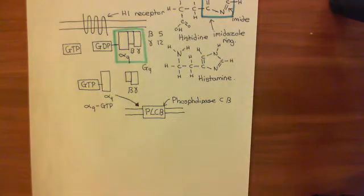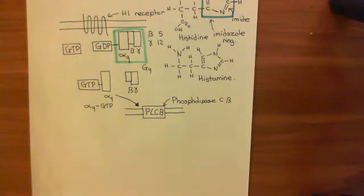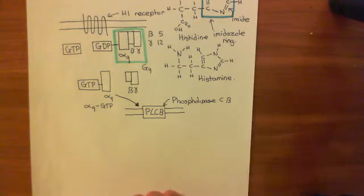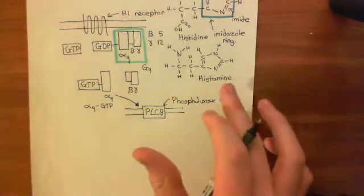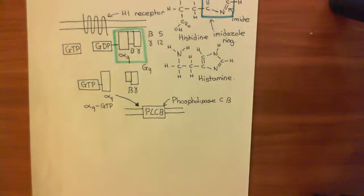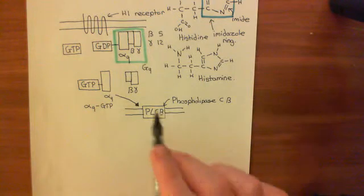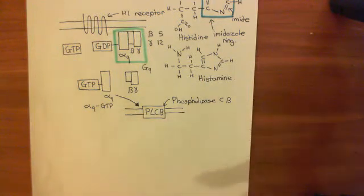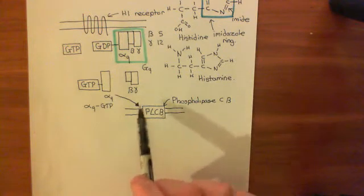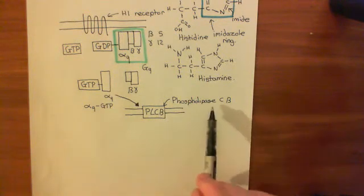Welcome to this next video on store-operated calcium entry. We are discussing this story right from the start — how we can activate the GQ pathway via histamine binding to the H1 receptor. So far we've got to the fact that the alpha-Q-GTP subunit will bind and activate the phospholipase C beta.